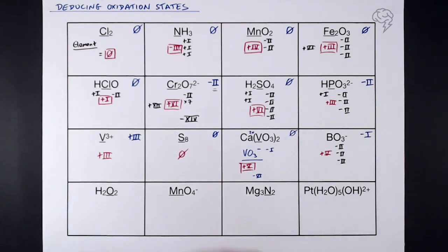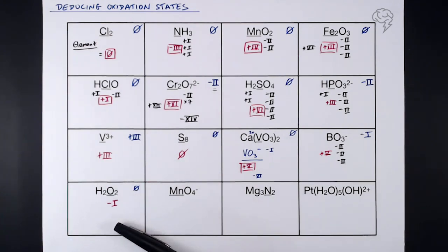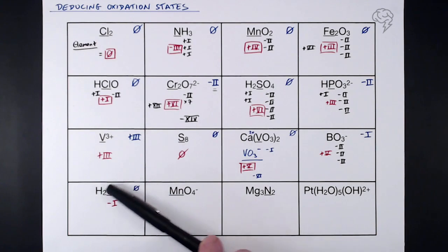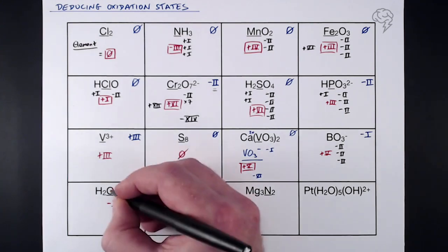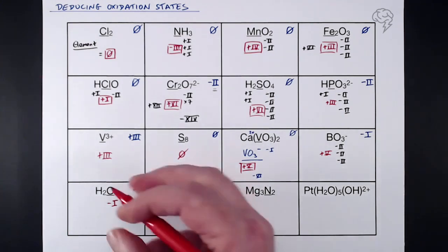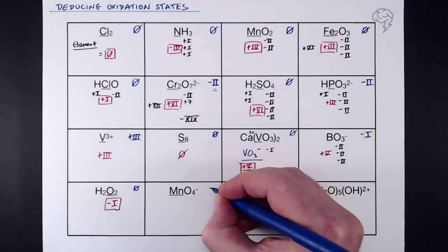H₂O₂: overall oxidation state is zero. An exception to the rule applies here — when oxygen is in a peroxide molecule like this, it doesn't have a -2 oxidation state; it's actually -1. If you tried two lots of -2 for oxygen and two lots of +1 for hydrogen, it doesn't balance — they don't add to zero. So it's the oxygen that adjusts, giving a -1 oxidation state for oxygen in a peroxide.